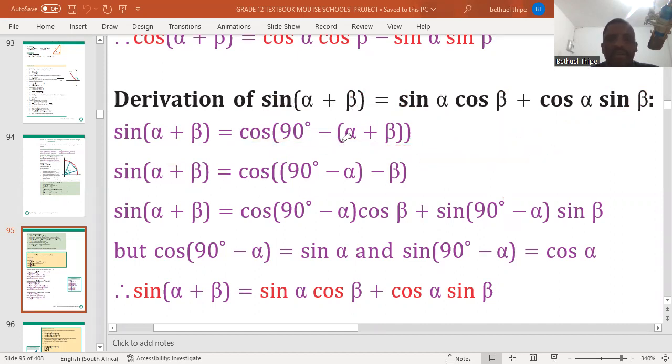Having said that, here we remove brackets. We multiply alpha with negative. We multiply negative with beta. That is why here we have negative beta, negative alpha.